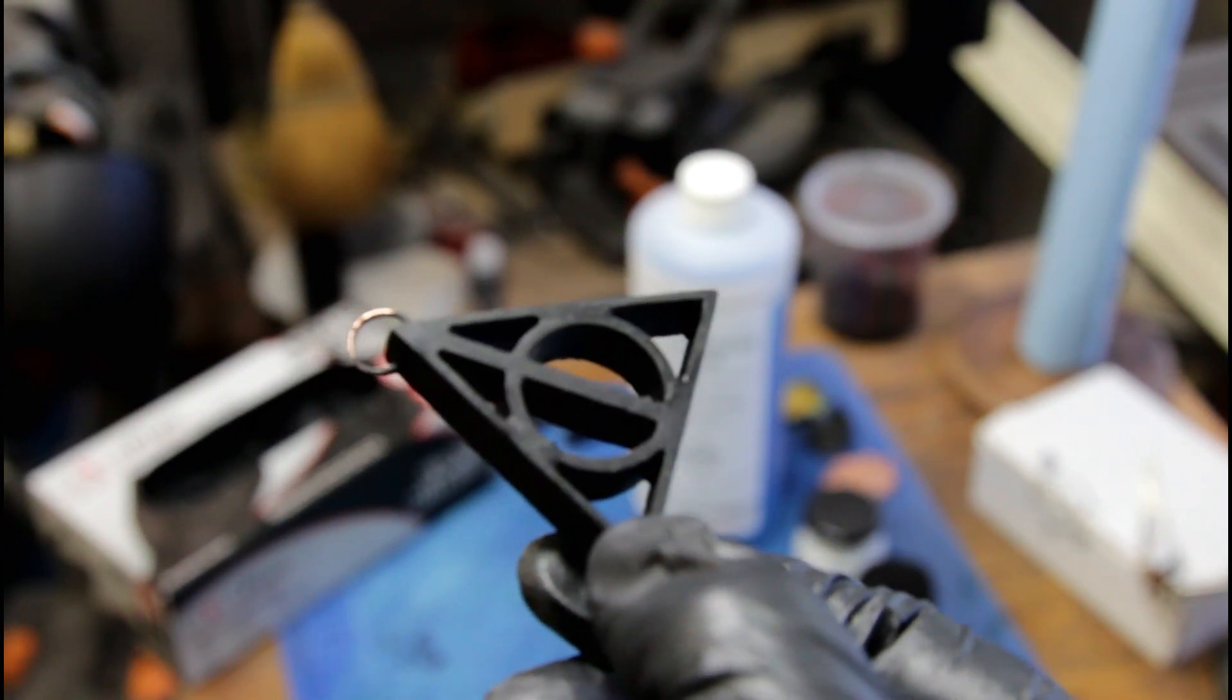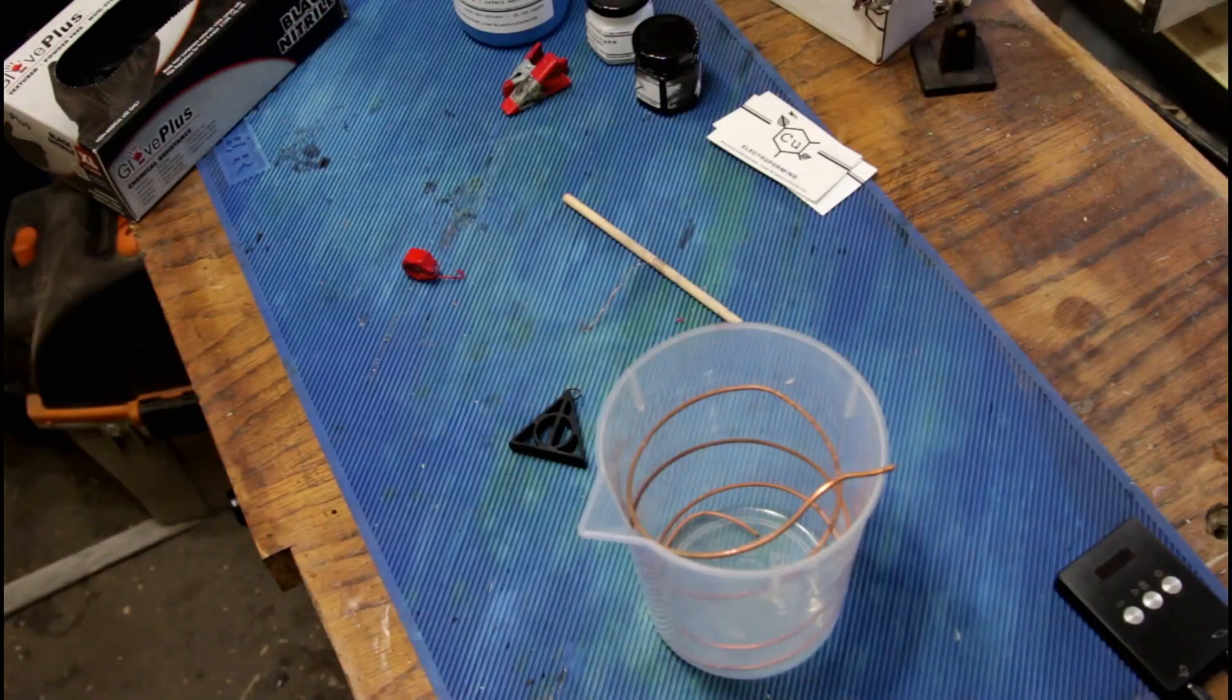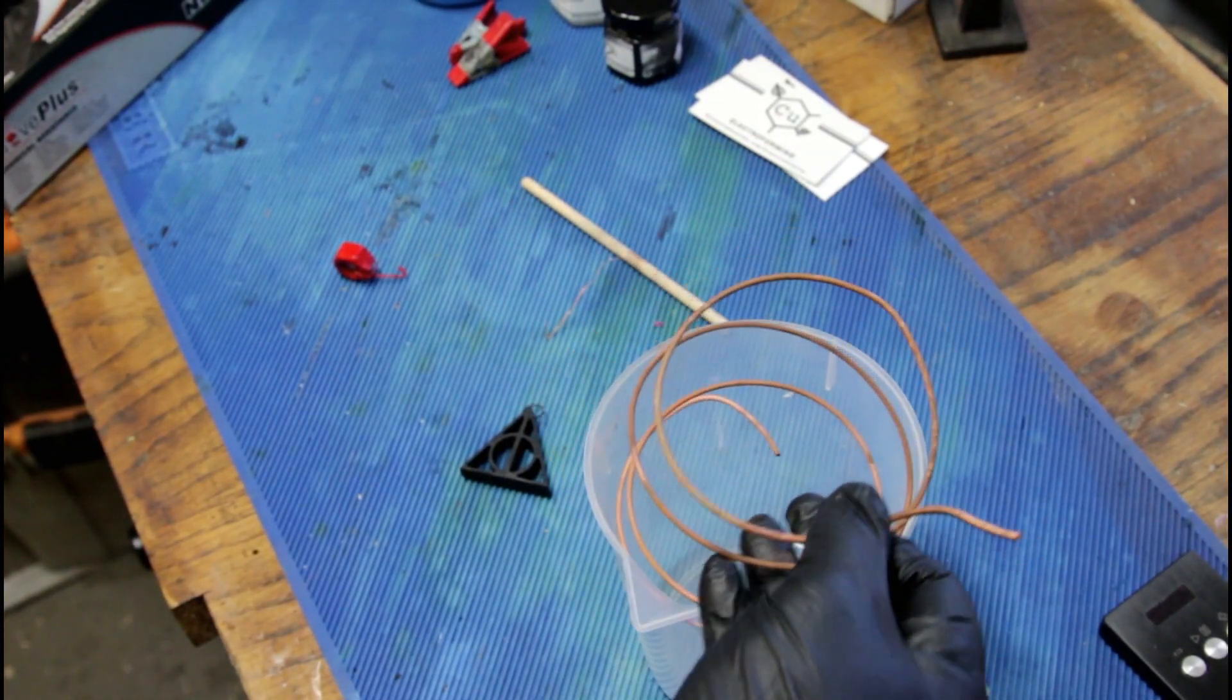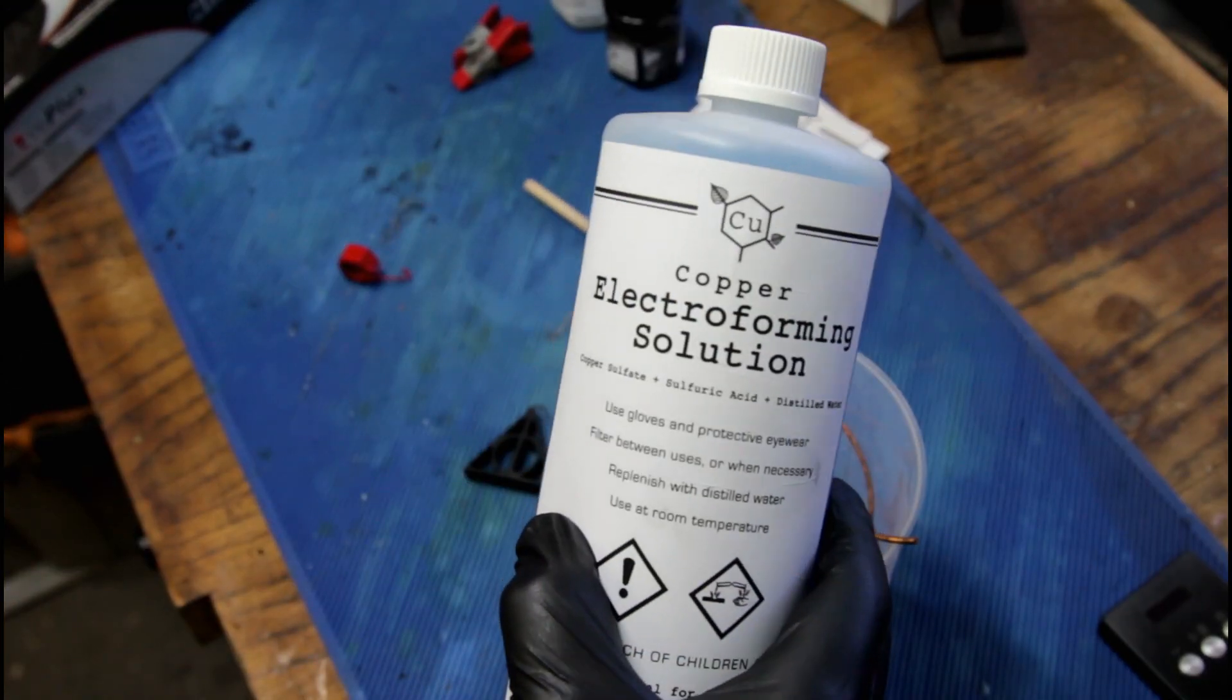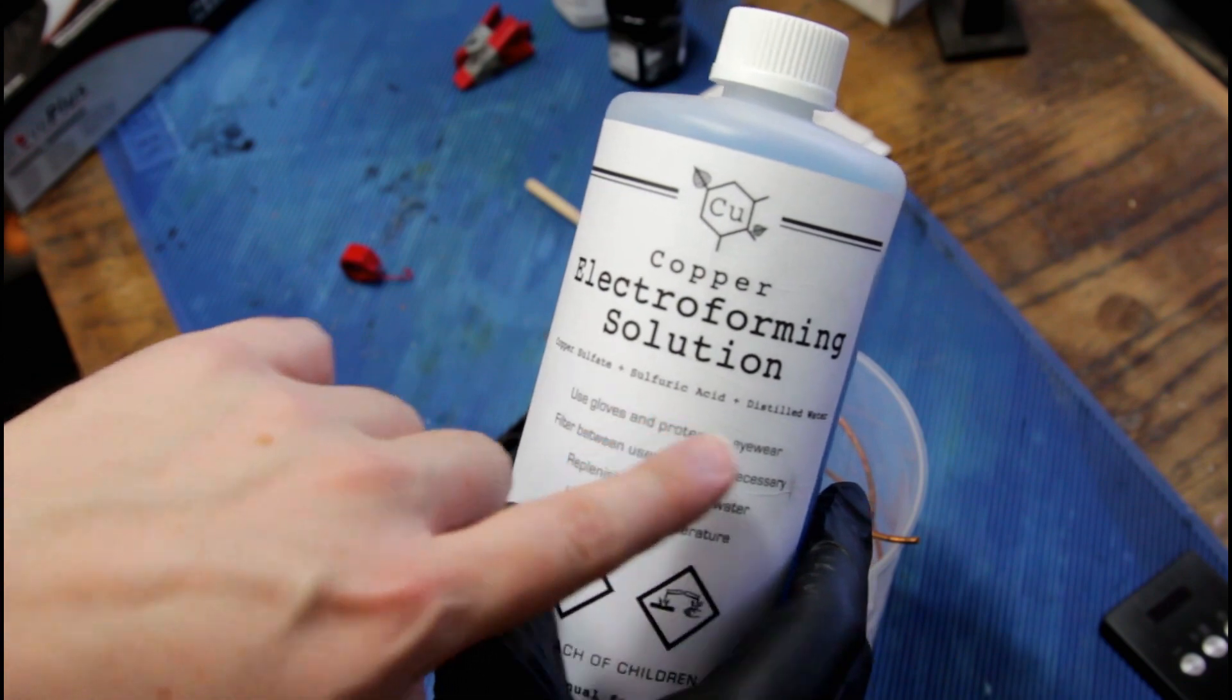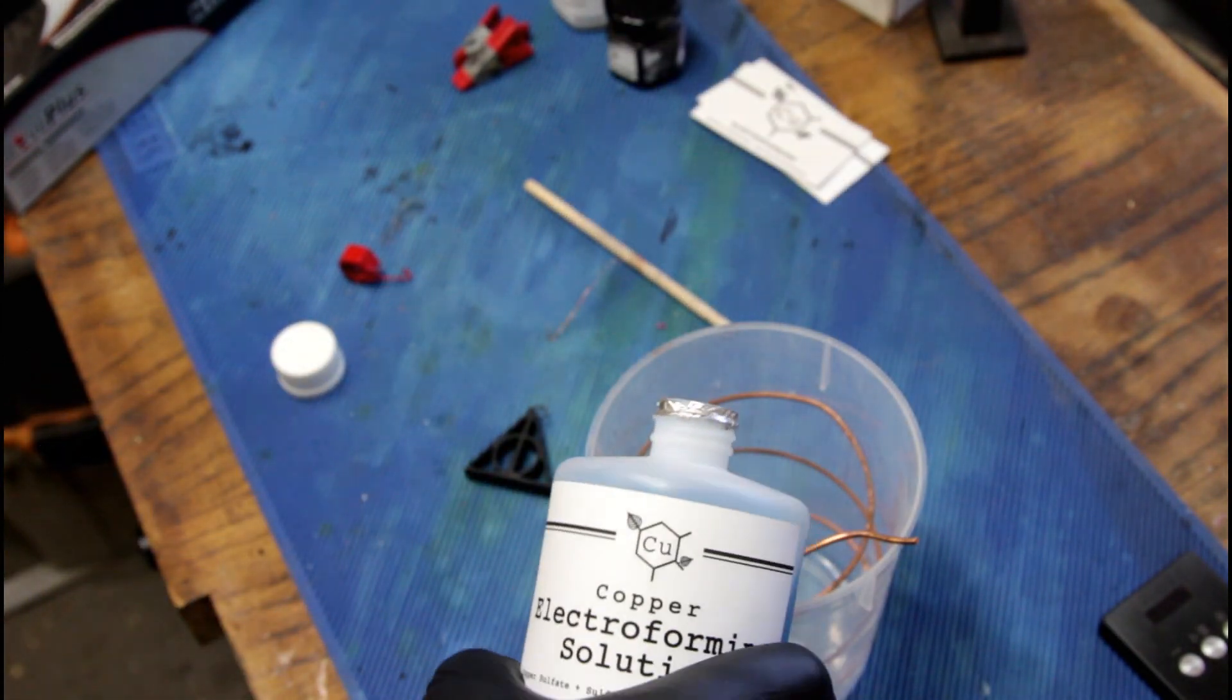We're going to make a circuit. Got a plastic cup with a copper coil in it, and then what we add to that is this electroforming solution: copper sulfate, sulfuric acid, distilled water. Let's go ahead and pour it into our container.